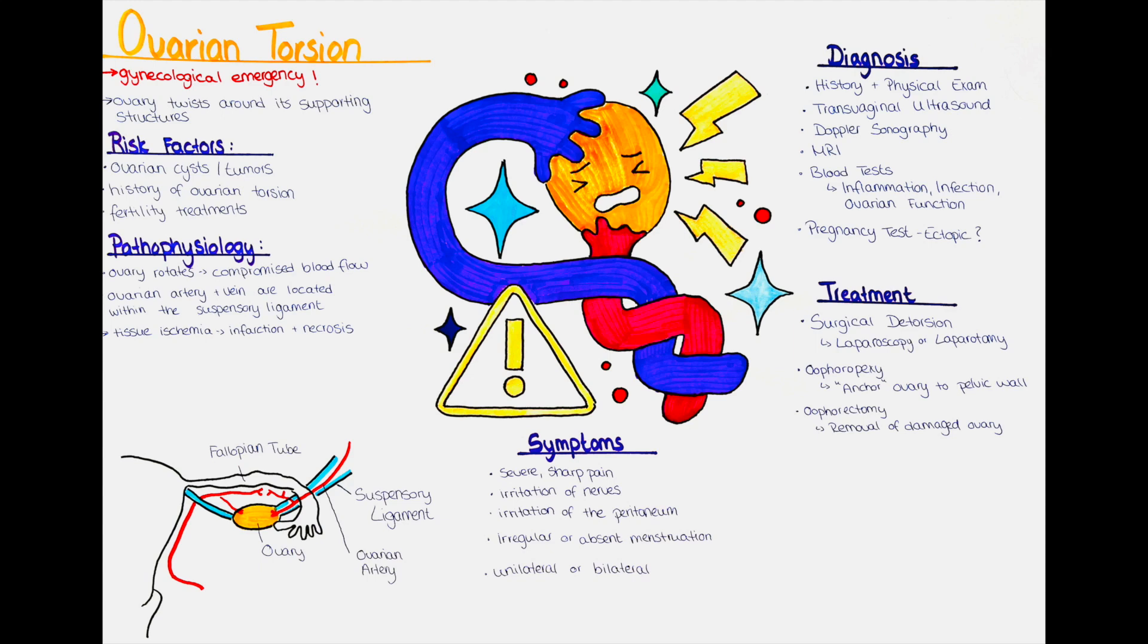The twisting and compression of tissues in ovarian torsion can irritate and stretch the nerves in the ovary and surrounding structures. This nerve irritation contributes to the severe pain experienced by patients with ovarian torsion. The torsion of the ovary can cause it to become swollen and distended. The increased size of the ovary and the pressure exerted on surrounding tissues can also lead to localized discomfort and pain.